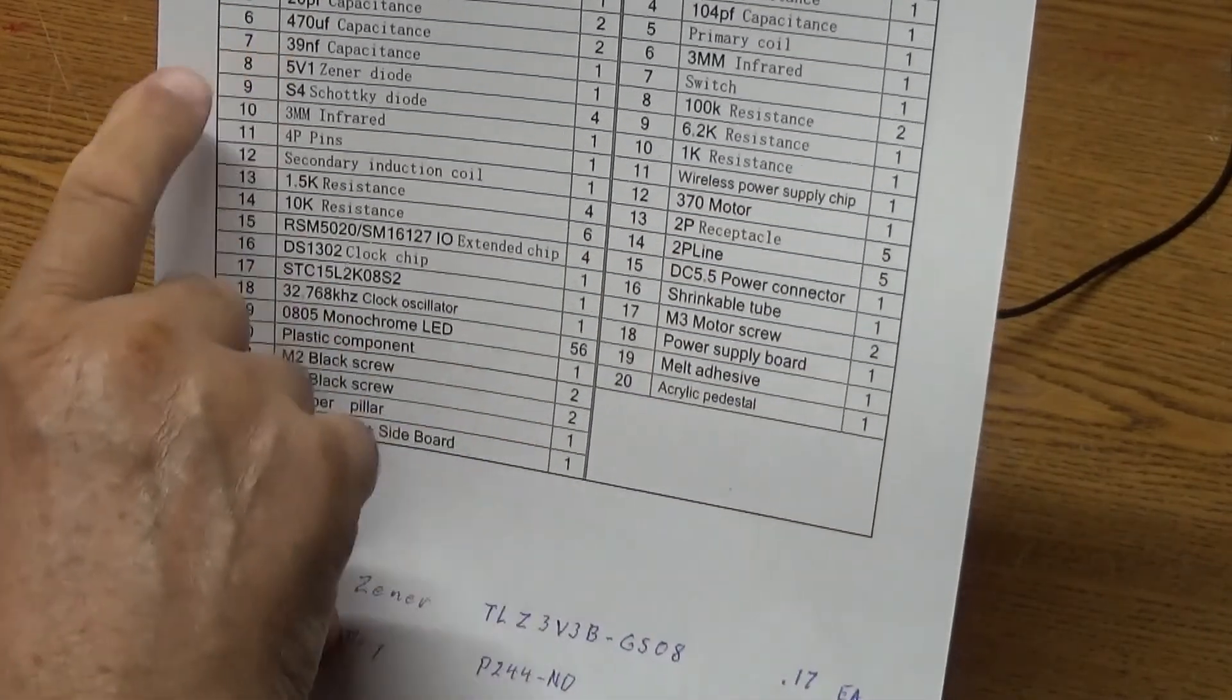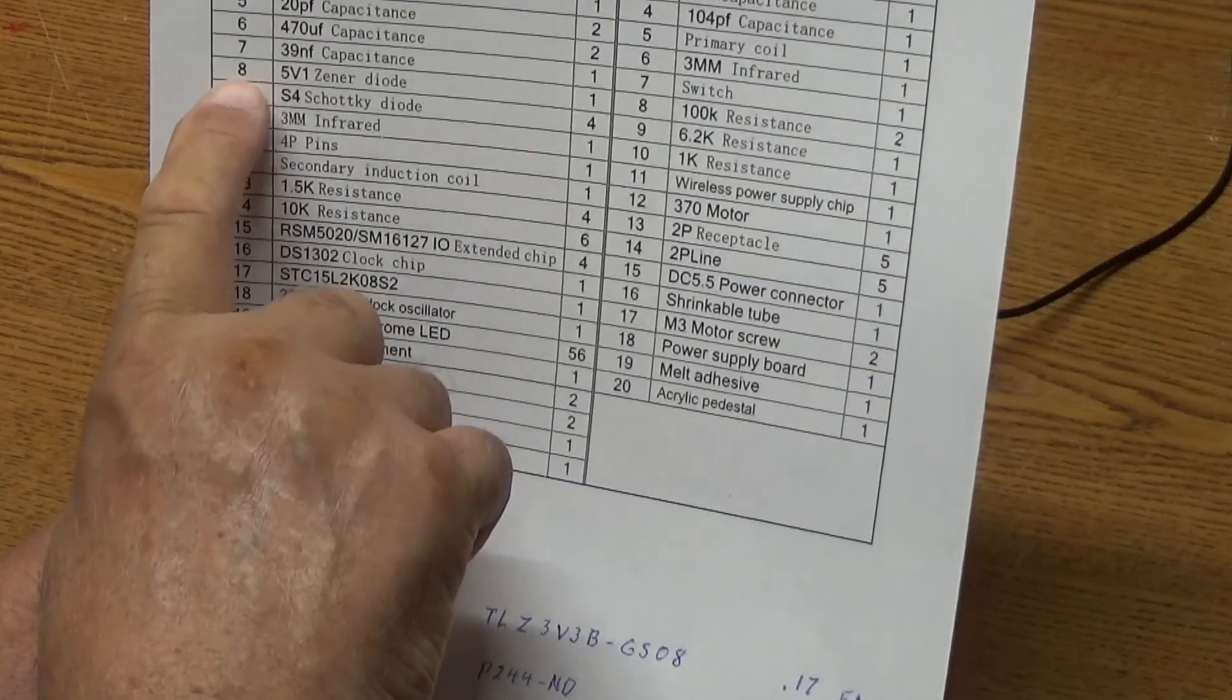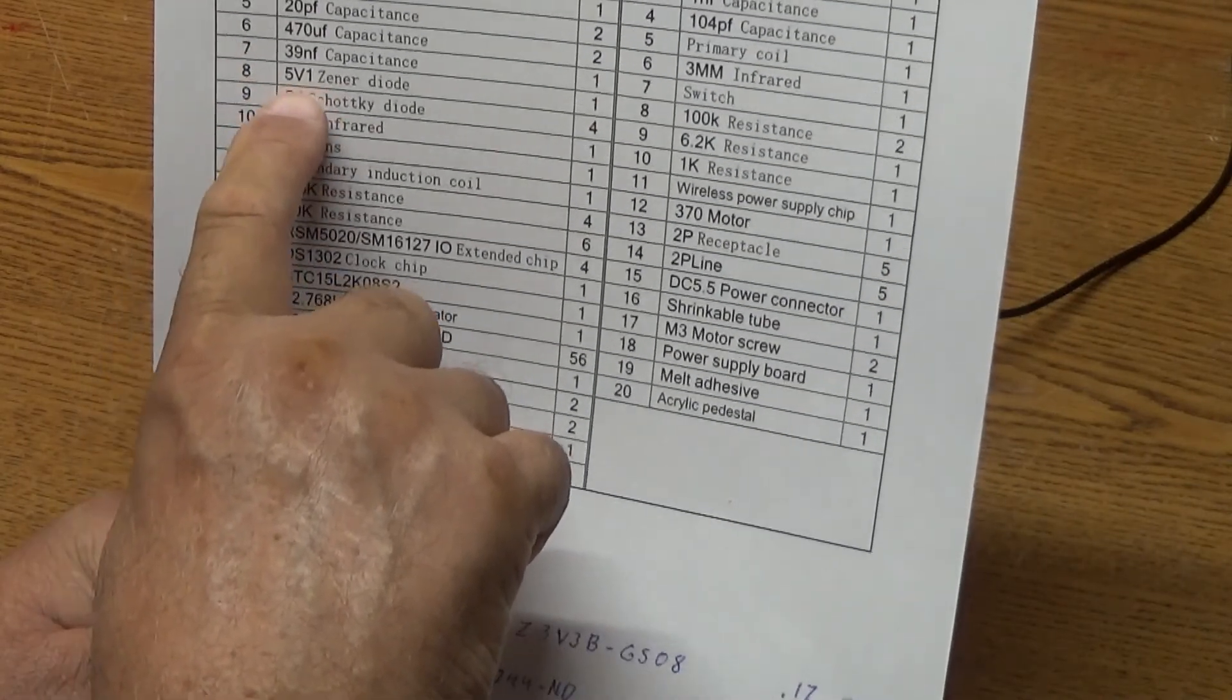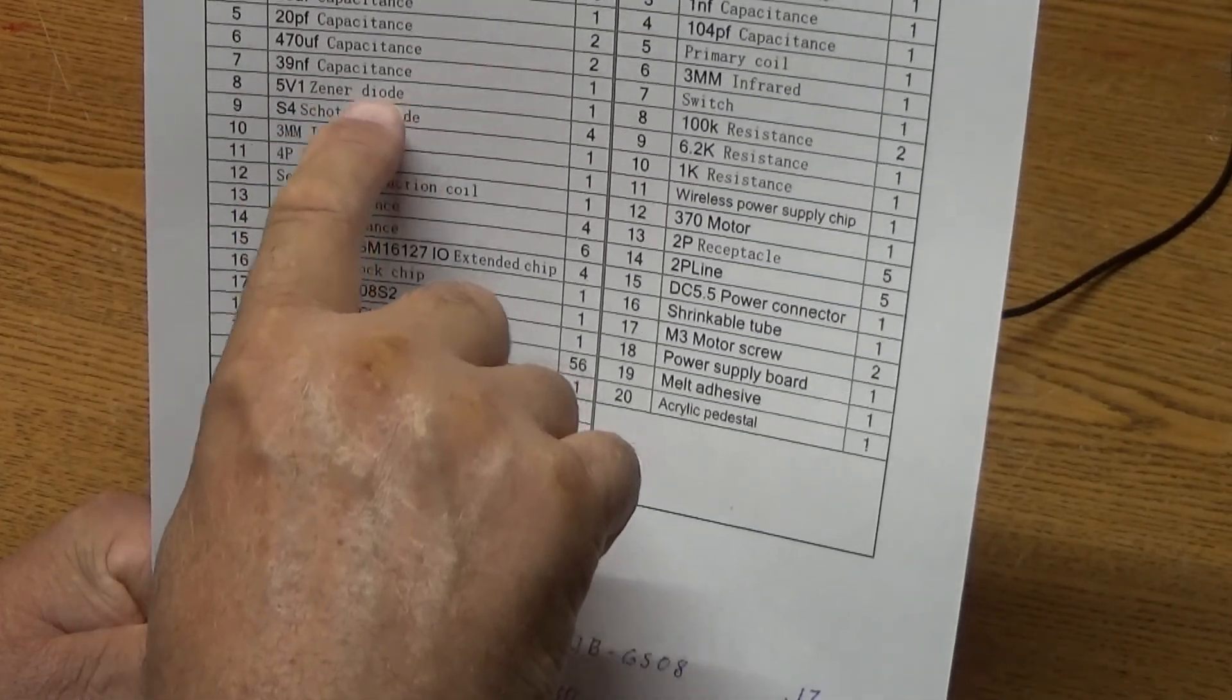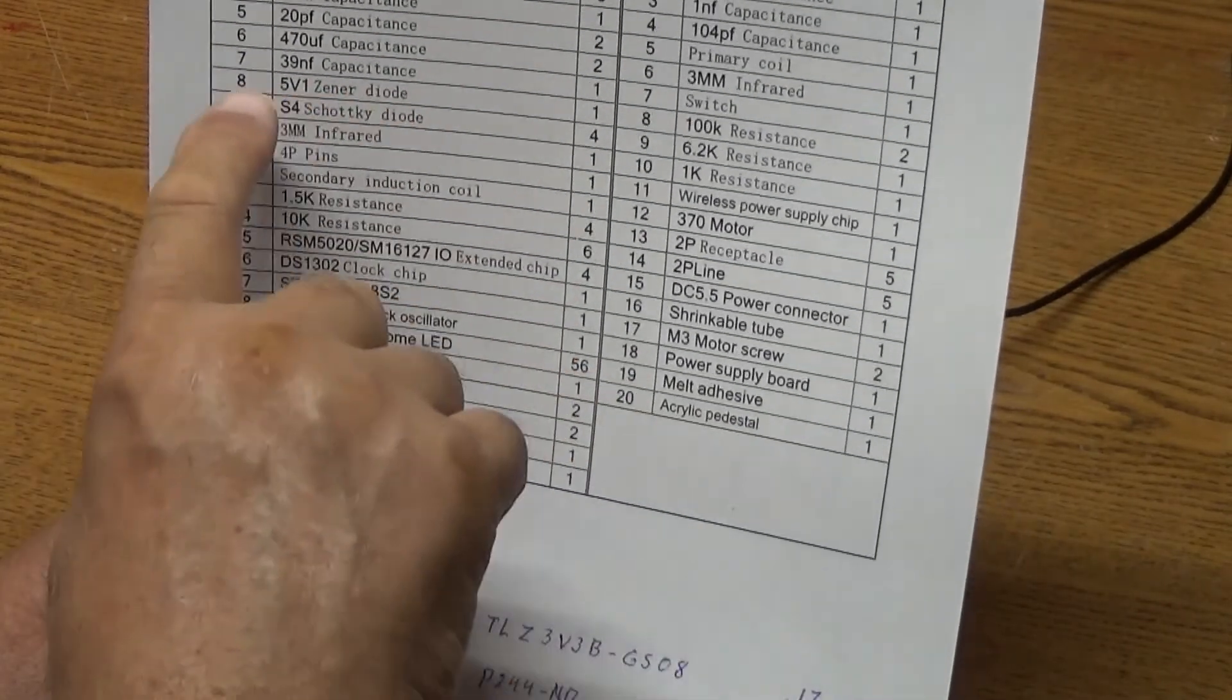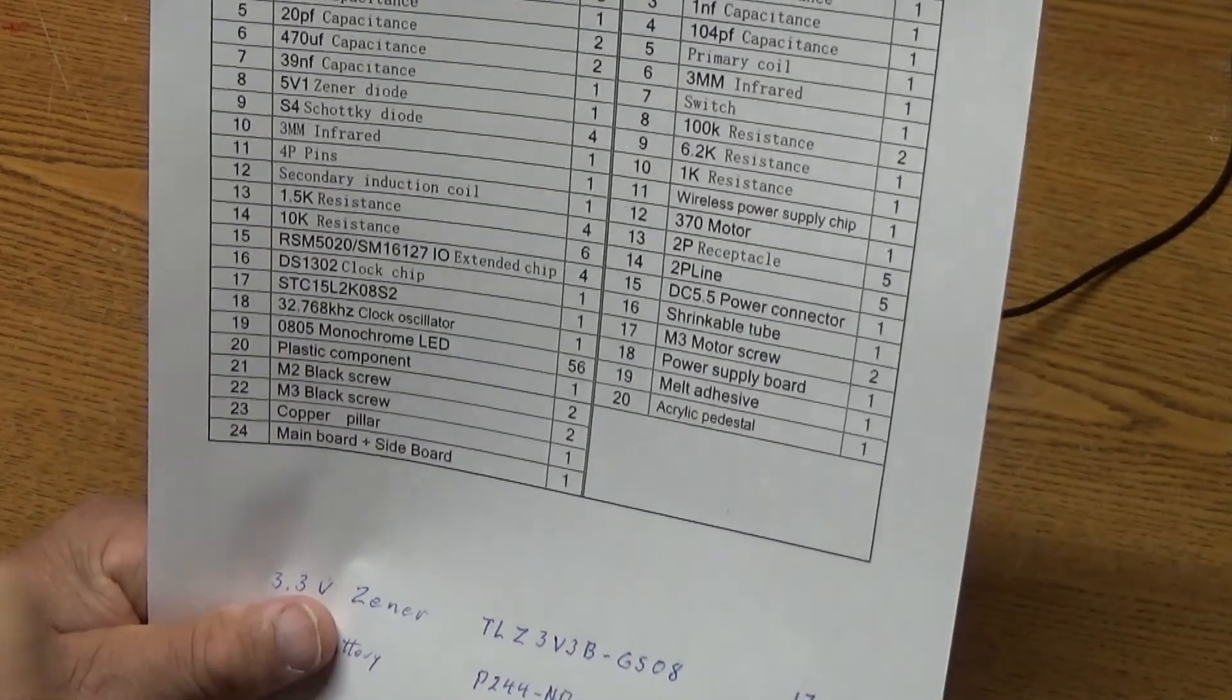...is this STC-15L-2K-08-S2 chip right here and this right after the 15 is an L and just for reference, this is the bill of material, so just for reference, up here, item number 8 is a 5.1 volt Zener diode which regulates the voltage down to 5.1 volts.